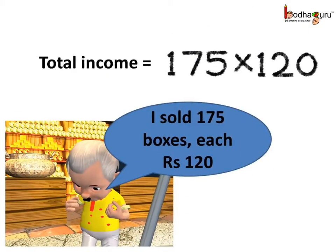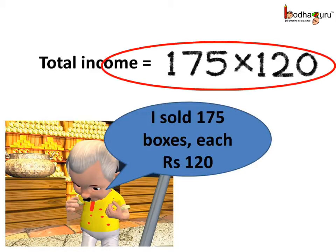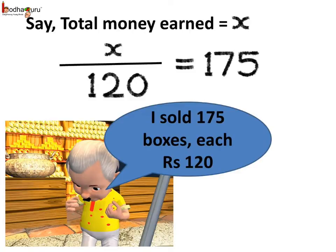Let us take another example. Jagan's shop sold 175 boxes of sweet on a festival. Each box was sold at Rs. 120. So, how much did he earn from the festival? It is equal to 175, the number of boxes, multiplied by the cost of each box, that is 120. This problem can also be expressed by an equation. If we express the total earning by a variable x, then total earning divided by the rate of 1 box is equal to the number of boxes sold. Thus, x divided by 120 is equal to 175.